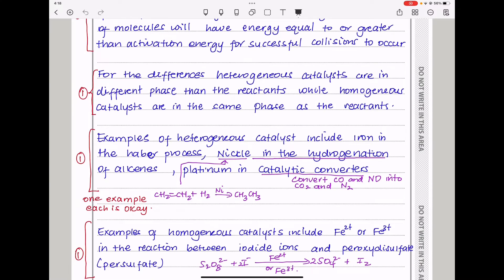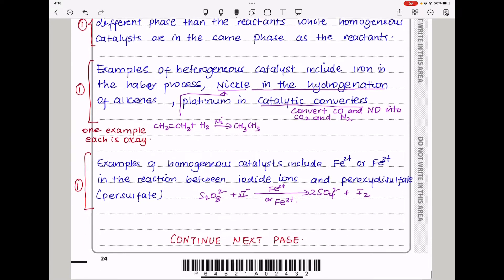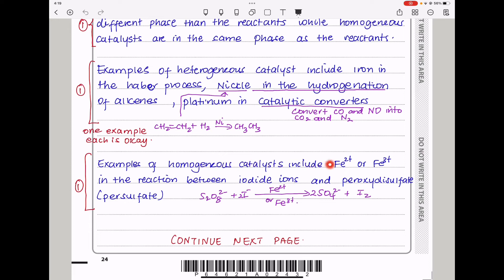Now, I went on to talk about the examples. Examples of heterogeneous catalysts include iron in the Haber process, nickel in the hydrogenation of alkenes, platinum in catalytic converters, and so on. Here, you could have earned a mark if you had just written one example. Examples of homogeneous catalysts include the iron 2, iron 3 in the reaction between iodide ions and peroxodisulfate ions. This is the reaction I'm talking about and in this reaction, either iron 2 or iron 3 can be used as catalysts.